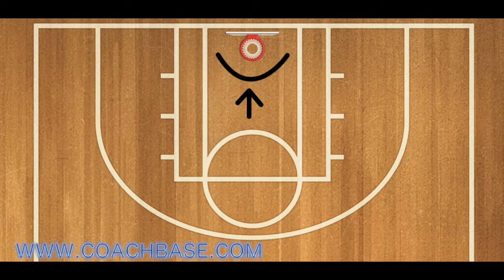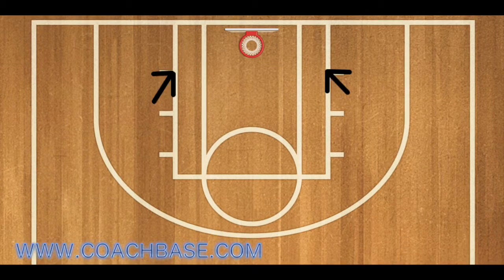Next is the half circle underneath the basketball net. For those who don't know, if a defensive player tries to take a charge inside that half circle, he is automatically called for the foul.